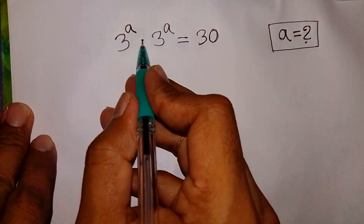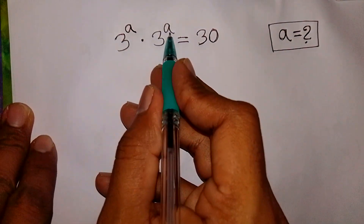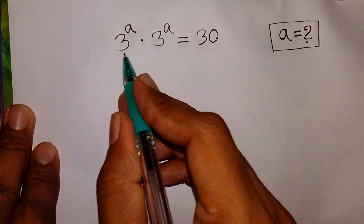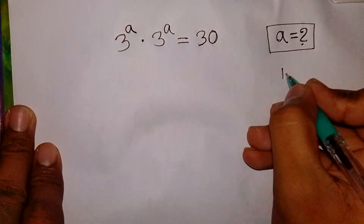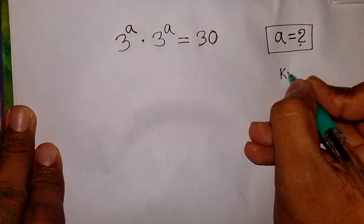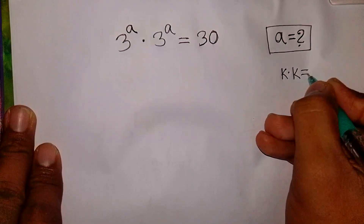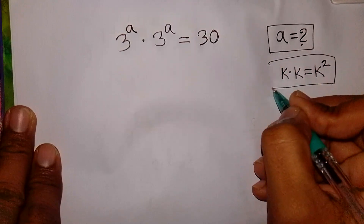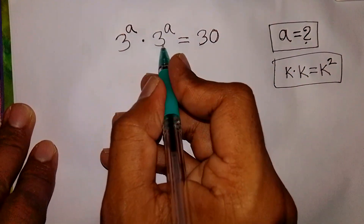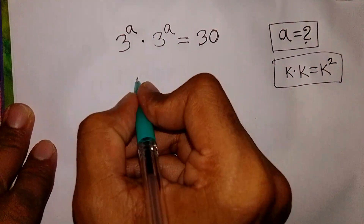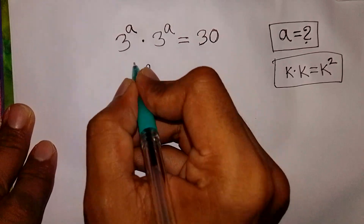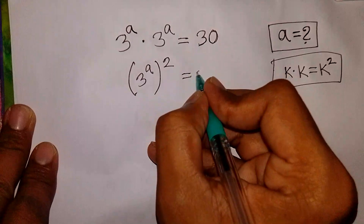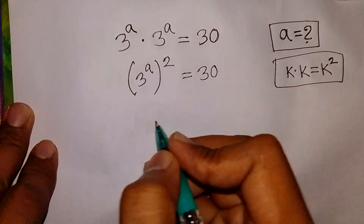3 power A times 3 power A is equal to 30. Find the value of A. Here, in the form of K times K is equal to K squared, this times this is same as 3 power A whole square is equal to 30.